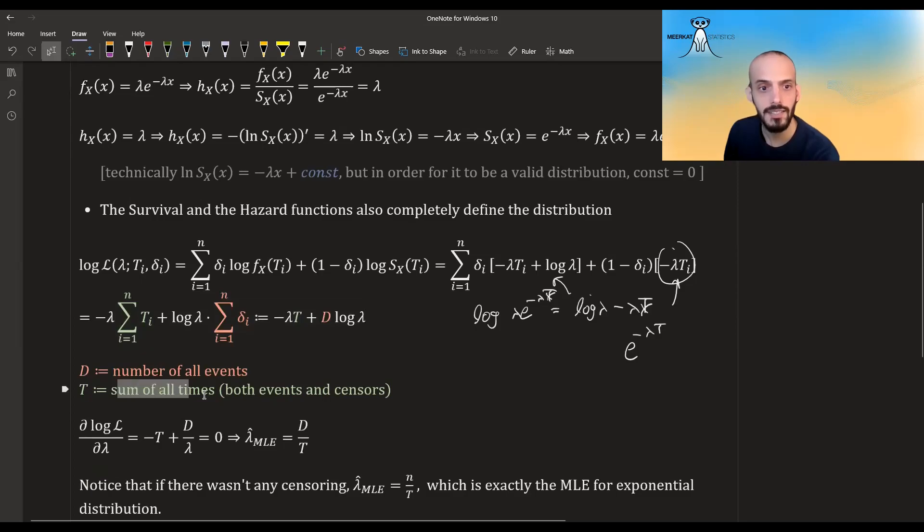We can denote it by a capital T. The capital T is the sum of all times both events and censors, and here in addition we have the log of lambda and the sum of the deltas. The sum of the deltas we can denote by a big D - it's just the number of all events. The delta is an indicator, one for events, zero for non-events, so the sum of it is just the number of events.